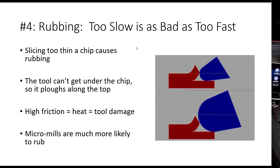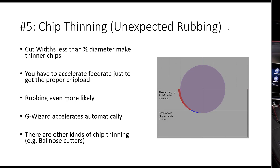Our G-Wizard calculator has a rubbing warning — it will automatically avoid rubbing for you and tell you if you've forced it into a situation where rubbing will occur. Key concept four is chip thinning, another counterintuitive thing where you think: I'll be really conservative, cut a really shallow cut at a really slow feed rate — that'll be easy on my tooling. But that is actually a recipe for rubbing, and it's because of chip thinning.